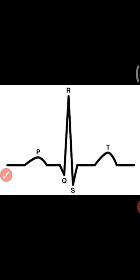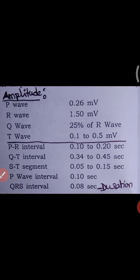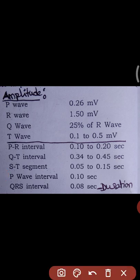Now the basic amplitudes and durations of electrocardiography are presented. The P wave amplitude is 0.26 millivolts. The R wave amplitude is 0.150 millivolts. The Q wave represents 25% of the R wave. The T wave amplitude is 0.1 to 0.5 millivolts.